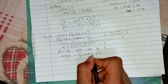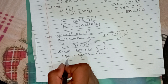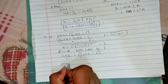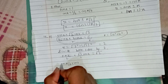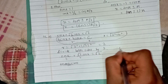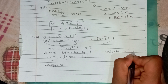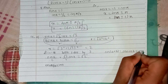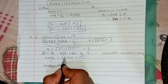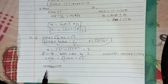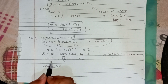Now we have the cos formula here. One by 2 is cos of 60 degrees, and root 3 by 2 is sin. We have the cos formula: cos a plus b equals cos a cos b minus sin a sin b, and cos a minus b is cos a cos b plus sin a sin b.